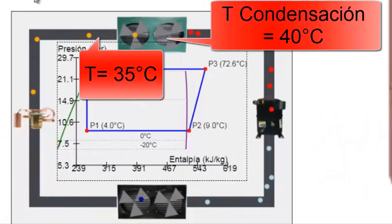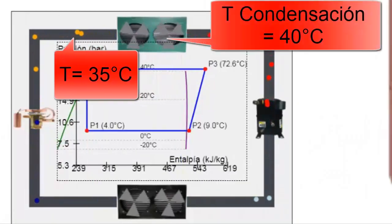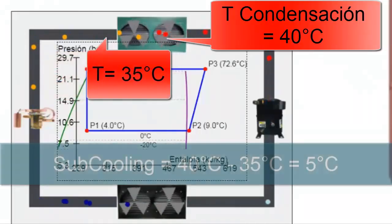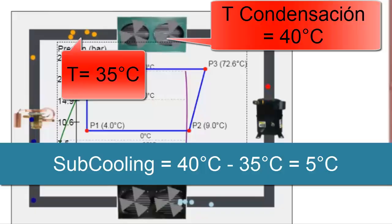For example, if the condenser's external surface is clean and there is proper airflow, slightly higher sub-cooling values can be achieved.